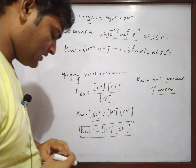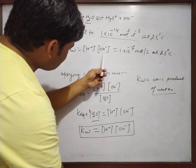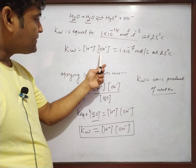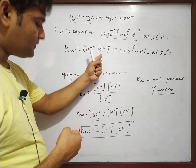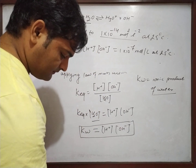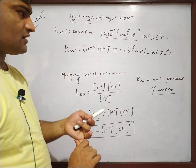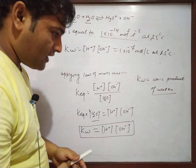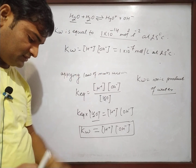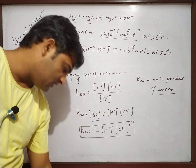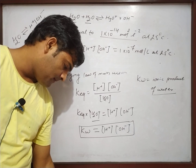When temperature increases, the concentration of H⁺ and OH⁻ ions increases — because when temperature rises, kinetic energy increases, molecular vibration increases, and increased vibration causes ionization to increase. So H₂O's degree of ionization increases — the degree of ionization or dissociation increases. This is the auto ionization of water.